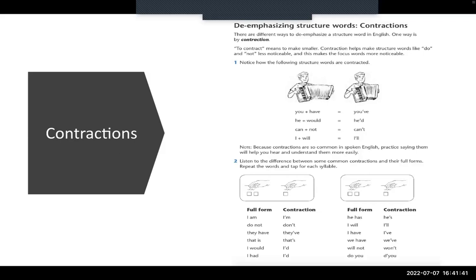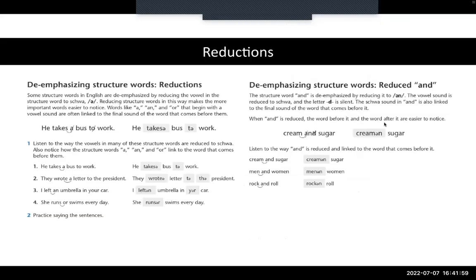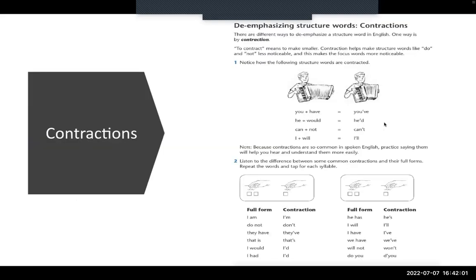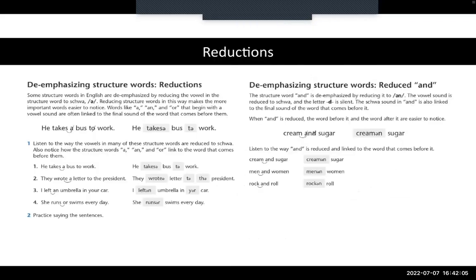'He has' becomes 'he's', 'I will' becomes 'I'll', 'I have' becomes 'I've', 'we have' becomes 'we've', 'will not' becomes 'won't'. So contractions make our speech - we're able to de-stress a lot more.